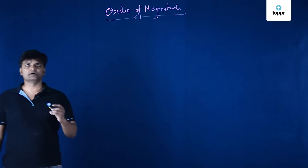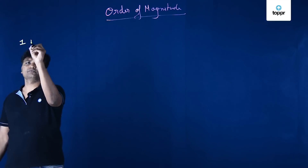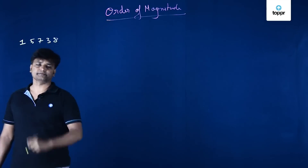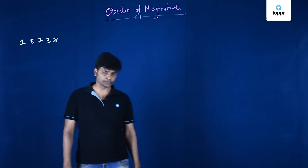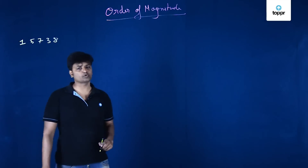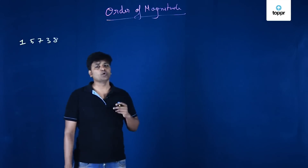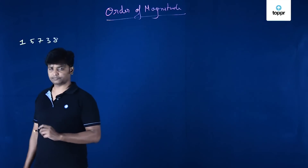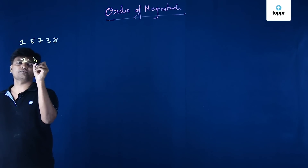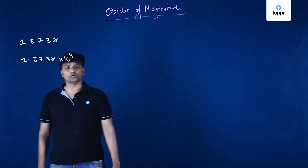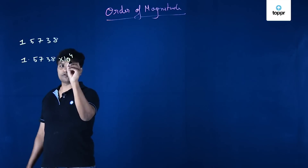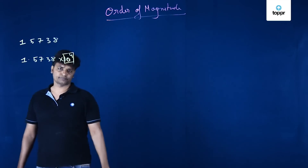Let's say I give you the number 15738 and ask you to calculate the order of magnitude. The first rule is to convert this number so that there is only one digit before the decimal point. So the number becomes 1.5738 × 10^4. Therefore, the order of magnitude is 10^4.